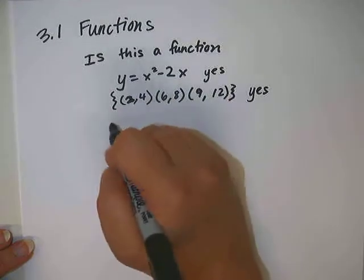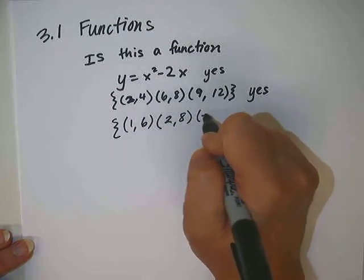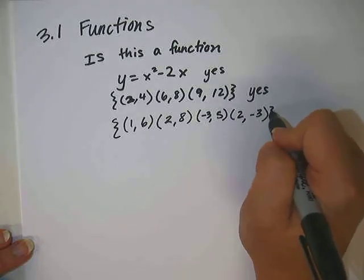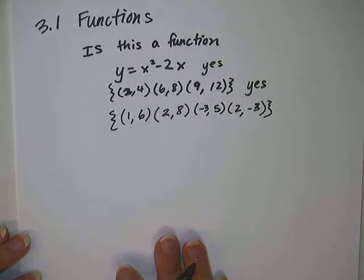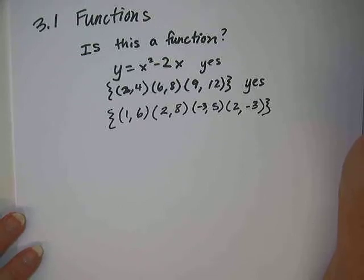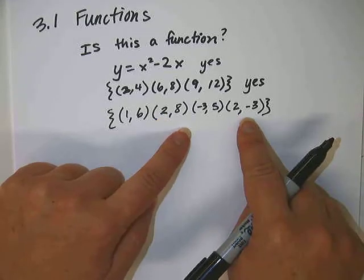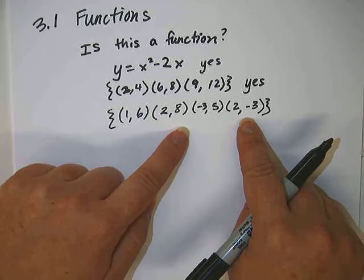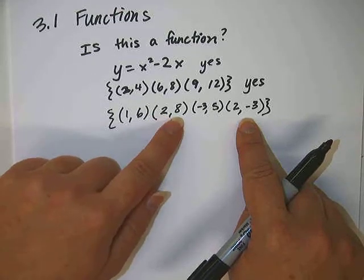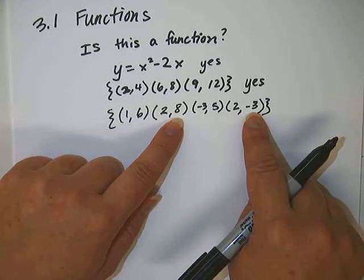What if we have (1,6), (2,8), (-3,5), (2,-3)? What about that one? No. Why not? Because the x value of 2 repeats, and there's a different y value each time. So this one is not 'plug in a number, get out the same answer each time,' because one time we might plug in 2 and get out 8, and the next time we might plug in 2 and get -3. So that one doesn't work.